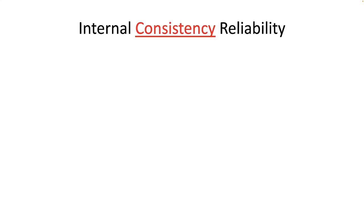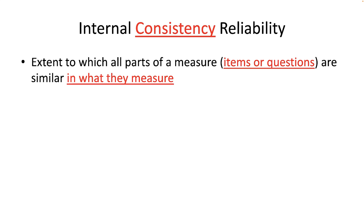Internal consistency reliability is by far the most popular method of assessing reliability of scores derived from an instrument. It is essentially an average inter-item correlation — the average of all possible paired correlations for every possible pair of items. It measures how well items measure the same thing. One means of increasing internal consistency is to increase the number of items; this form of reliability cannot be calculated for tests with only one item.